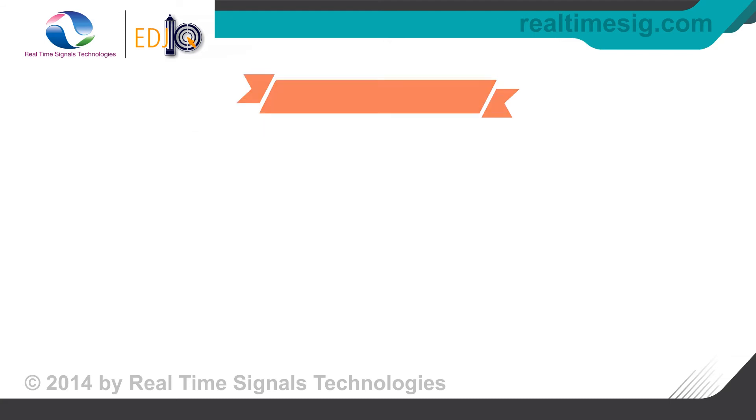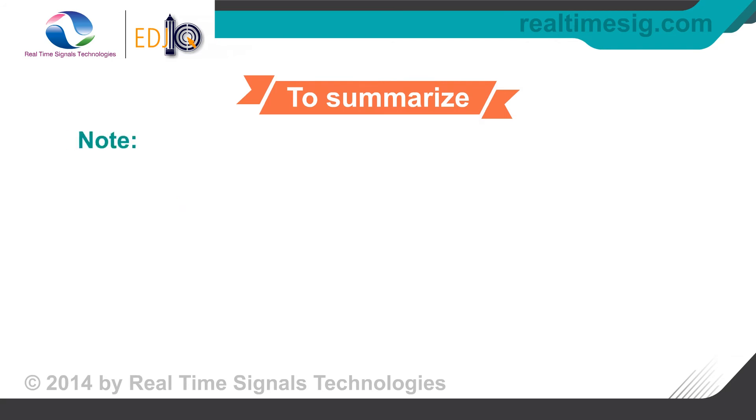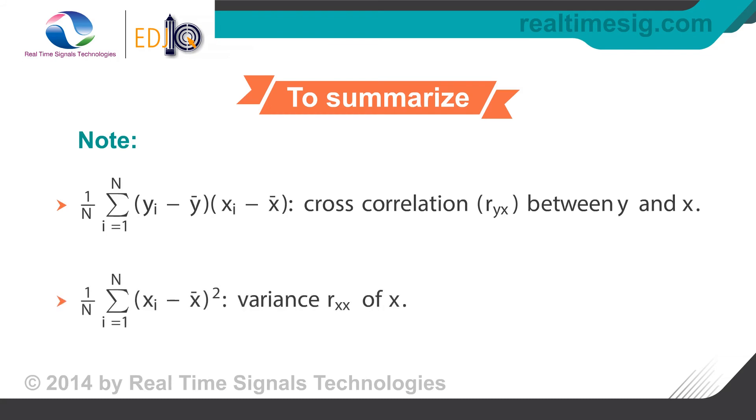Let us summarize the algorithm for linear regression. We will be given a set of input output pairs. First we compute the expression for m and c as given in the equations. Now for a new input, we can use the computed m and c values to get the required prediction for output. We note here that the expression for m is composed of the cross covariance of the variable x and y in the numerator and the variance of x in the denominator. In a sense, m measures the normalized cross covariance between the variable x and y.